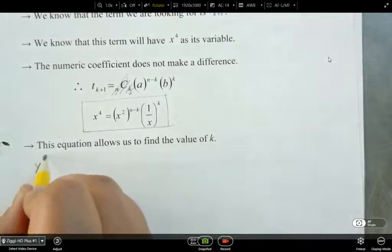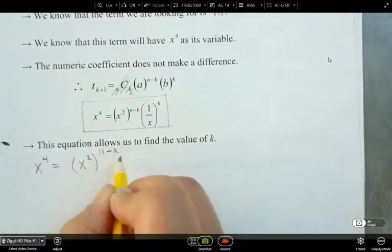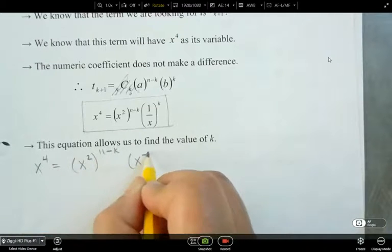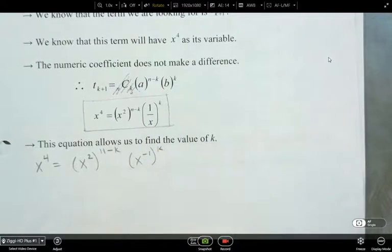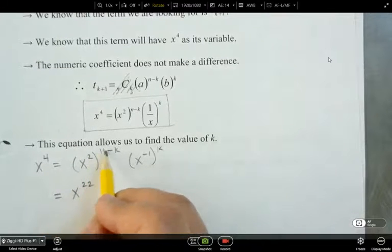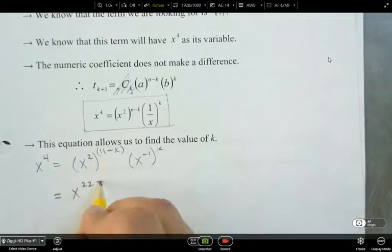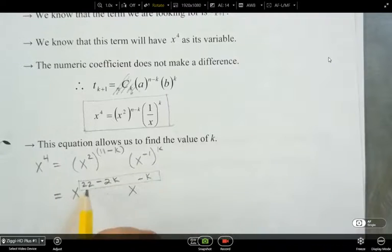So if I have x to the power of 4, I've got x squared, and then n is 11, x to the power of negative 1. I'm going to change that from 1 over x, and then I've got to the power of k. So now I just need to work this out. So I've got power to a power here. So multiply these two together. 22 minus 2k, and then x to the power of minus k. Now I've got two multiplying together, so I can add these exponents together.